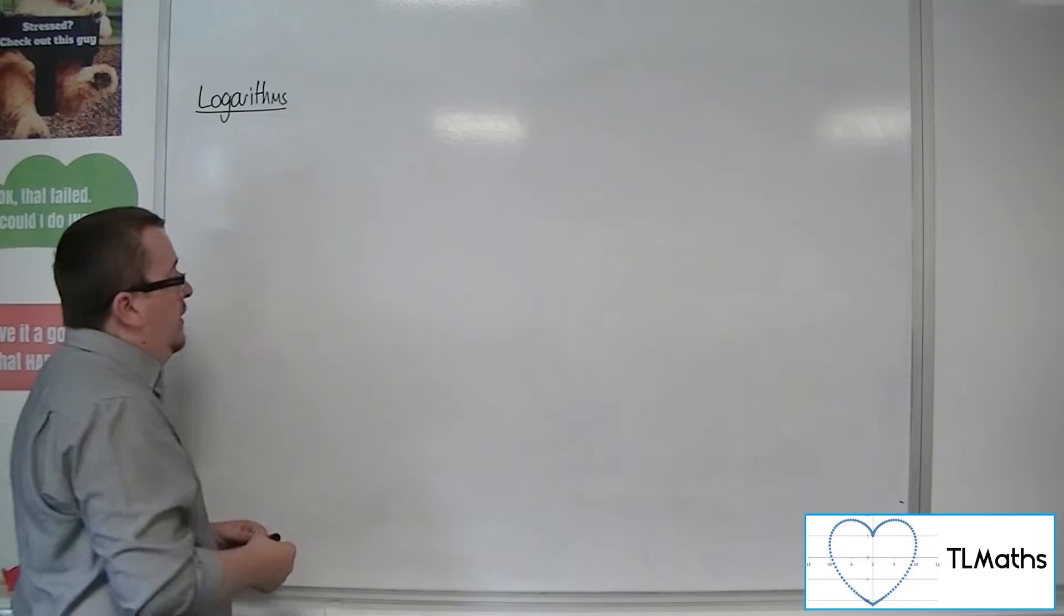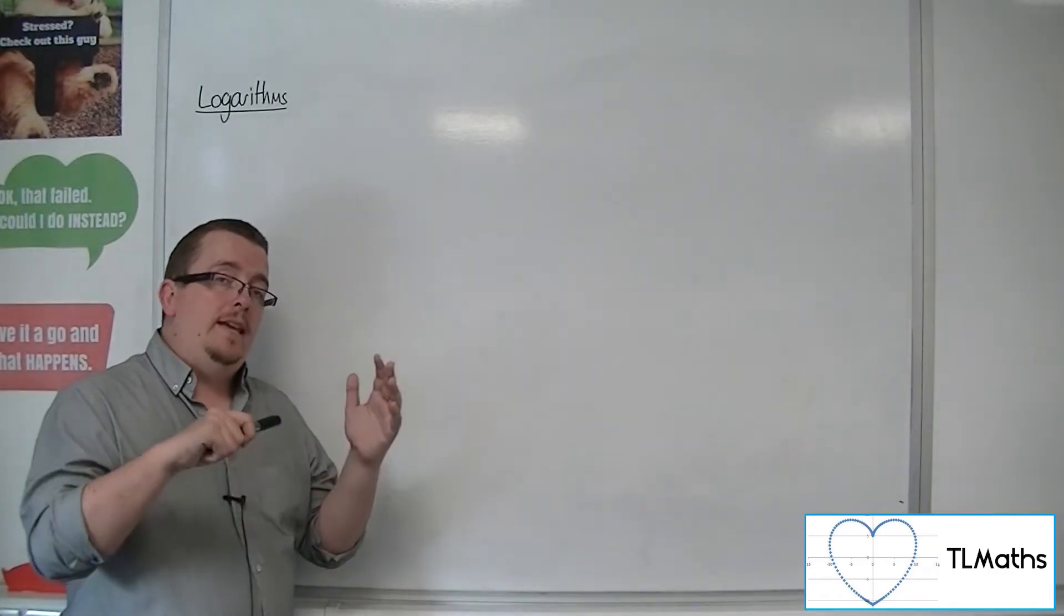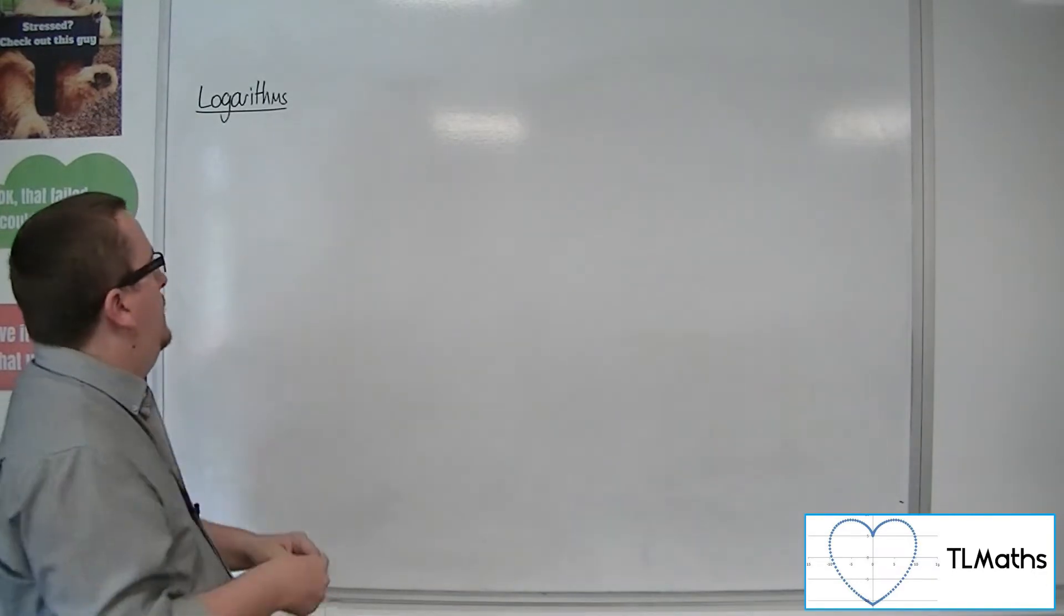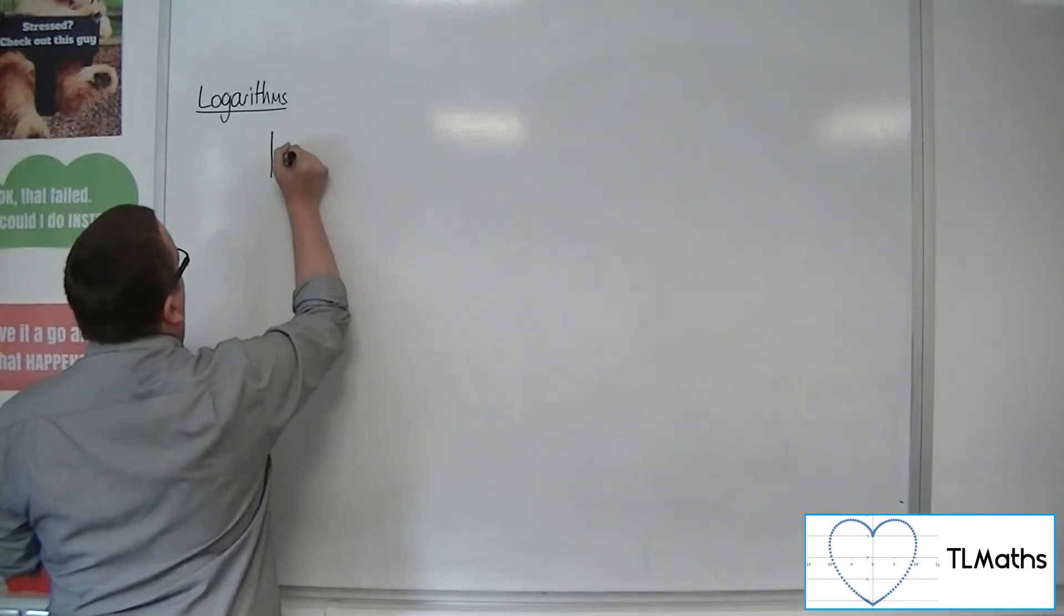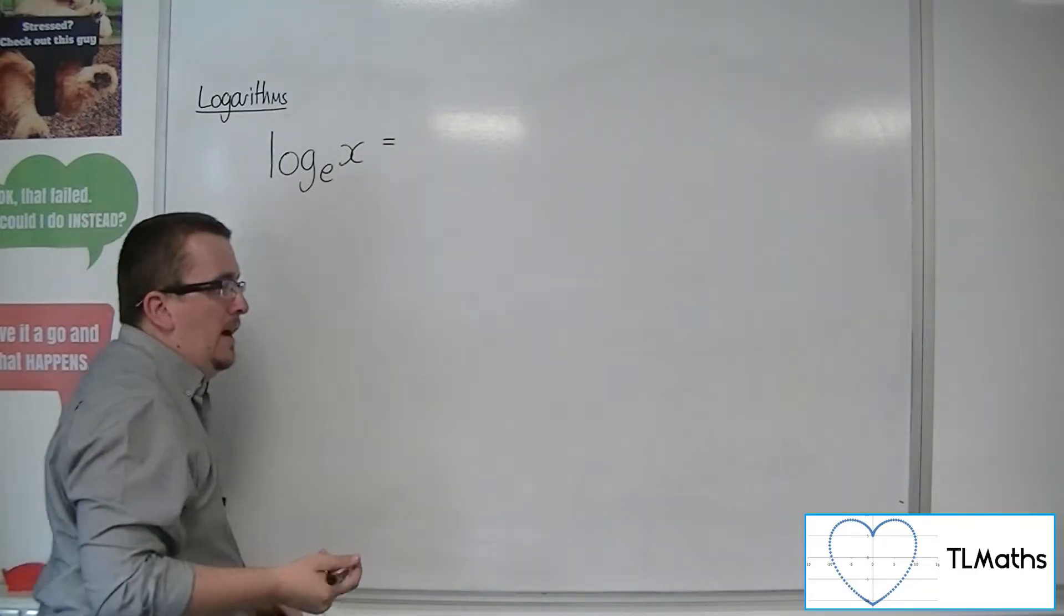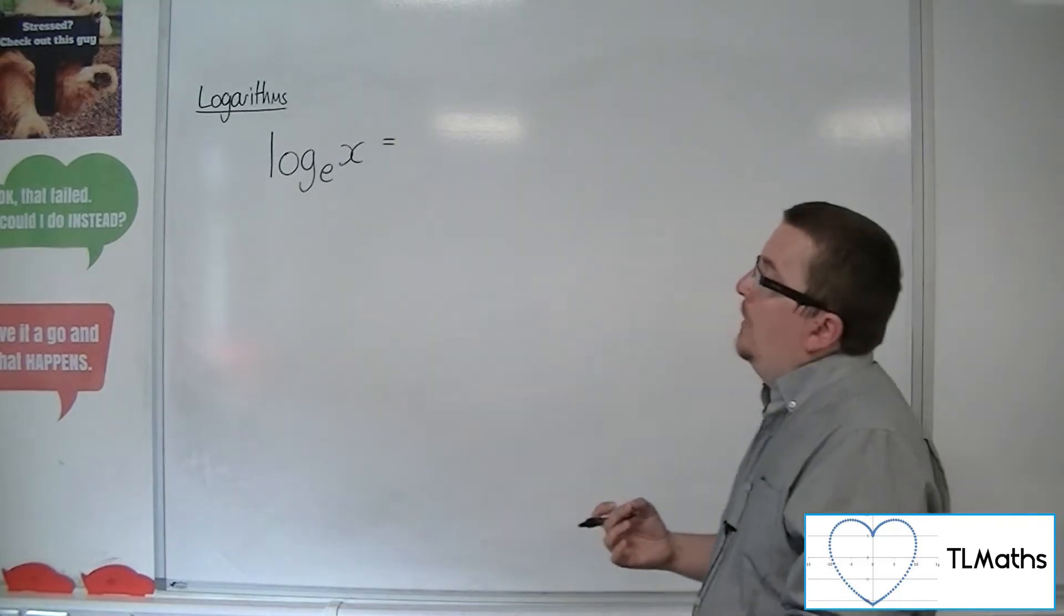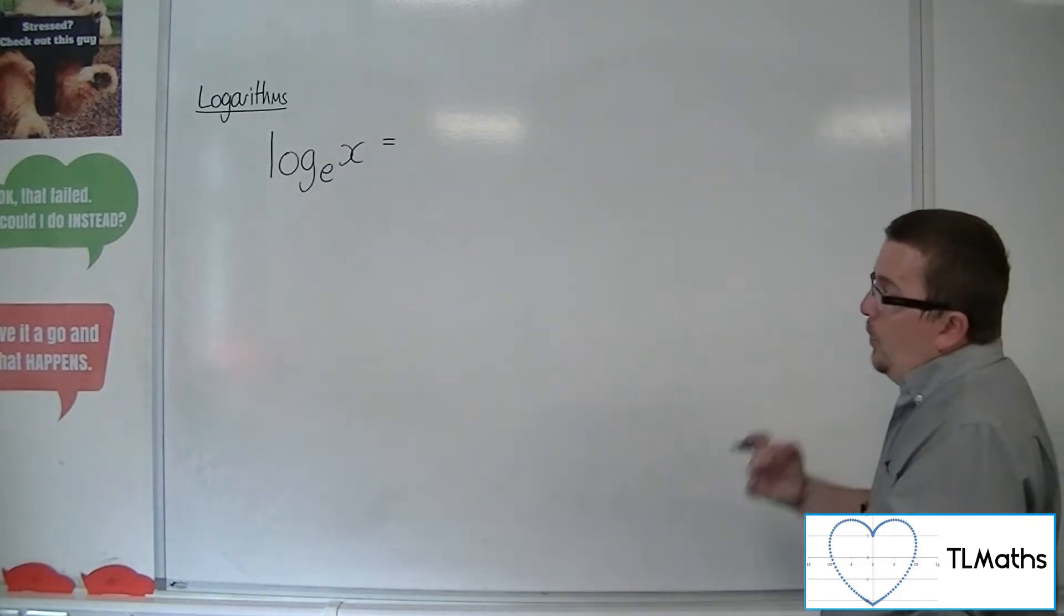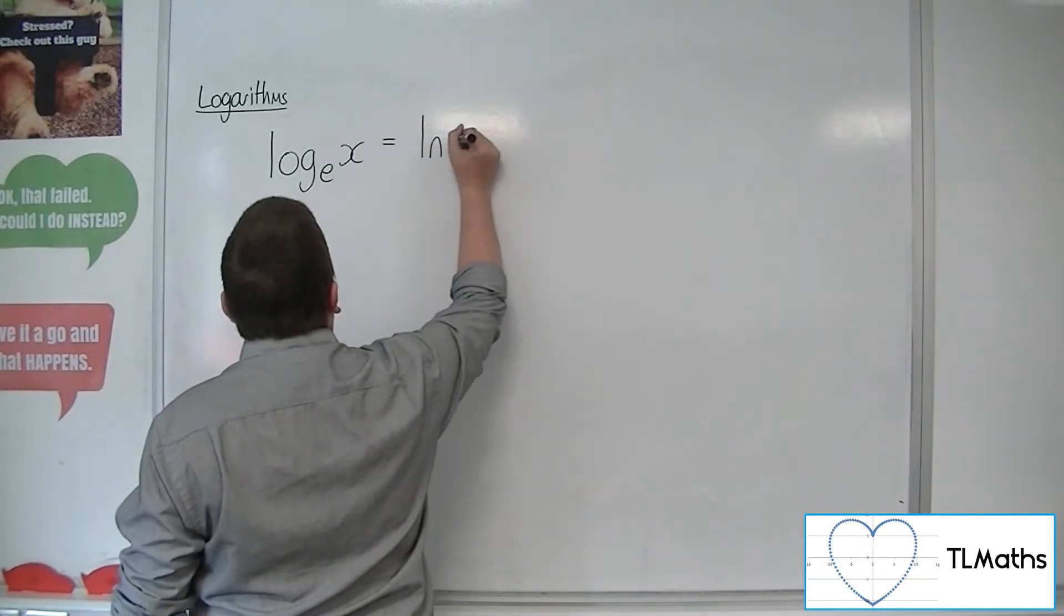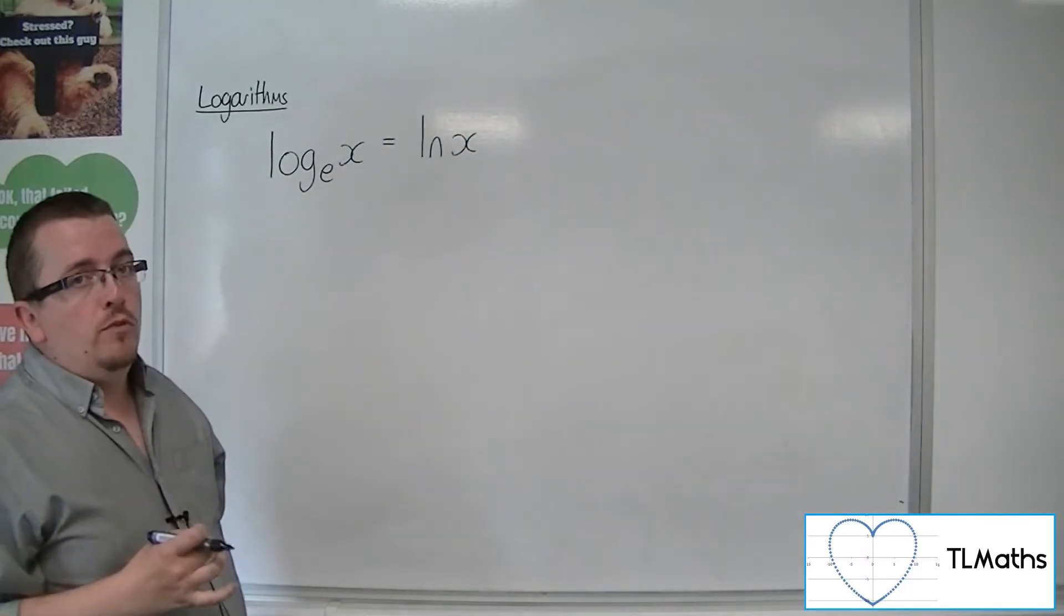But the one that mathematicians use a lot is log base e. So we've learnt about the number e, and we write log base e of x in another format. And the reason why is because it's written so often that we write it as ln of x, the natural logarithm of x.